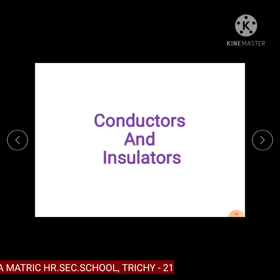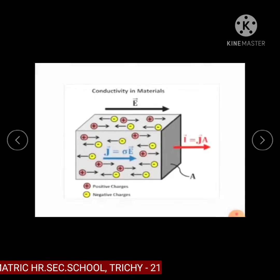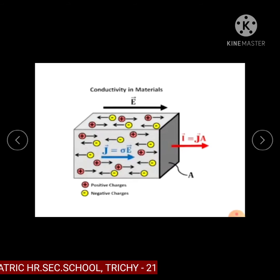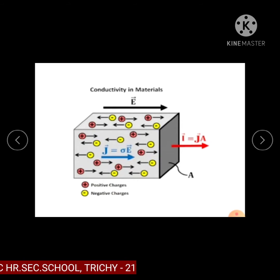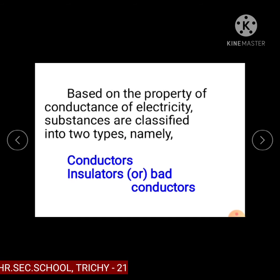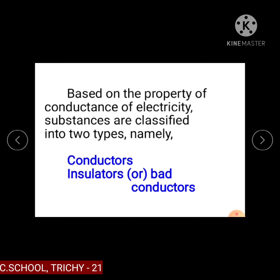Based on the property of conductance of electricity, substances are classified into two types: conductors and insulators, or bad conductors of electricity.